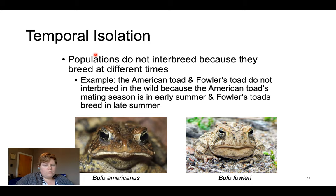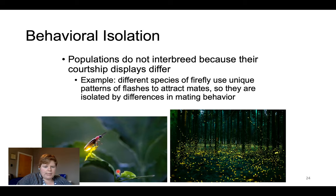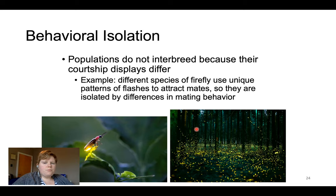Sometimes it's not place or time, but how organisms act — behavioral isolation through different courtship displays. Fireflies are a great example: males and females signal to each other with their bright glowing abdomens; females hang out on leaves waiting for signals from males flying around. There are different species of fireflies with different patterns of their glow — some do little spurts, some have longer flashes with bigger pauses. If you're a species looking for those spurts, you won't recognize the signal from a species that uses longer periods in between. Different species use unique patterns of flashes, and behavior drives those differences.